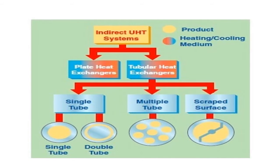Now we will briefly discuss the indirect UHT system. Two kinds of systems are used here. One is the plate heat exchanger, which we have discussed thoroughly while talking about HTST pasteurization. The other system is the tubular heat exchanger, where there will be one tube inside another, or sometimes even three tubes — also called a concentric tube. There can be a single tube or multiple tubes. Another system is the scraped surface heat exchanger, in which there is continuous separation of the heated layer of milk from the surface.